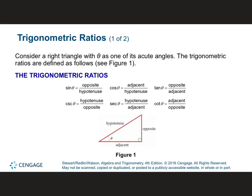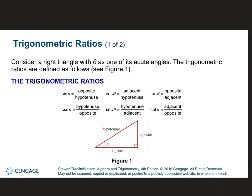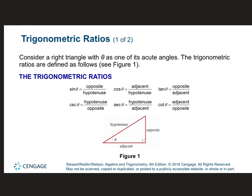So this is 5.2, called right triangle trigonometry. Everything we talk about today deals with right triangles. How do you guys know something is a right triangle? The 90-degree angle right here in the corner.